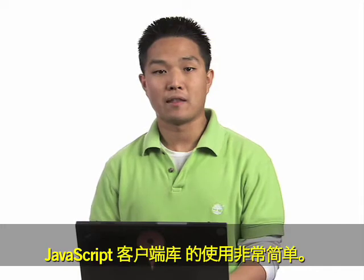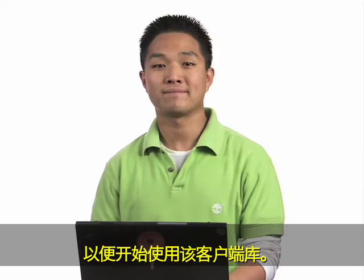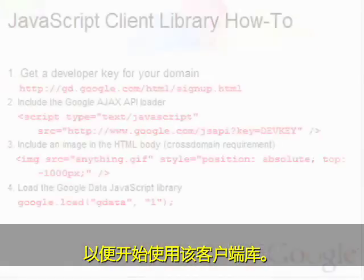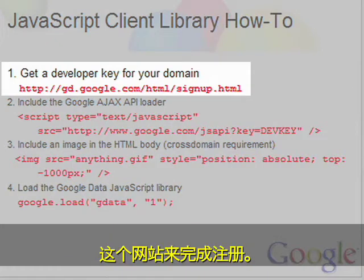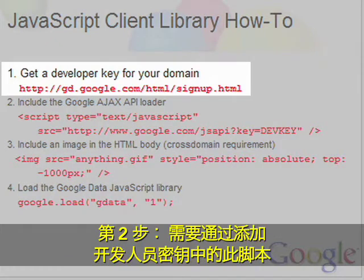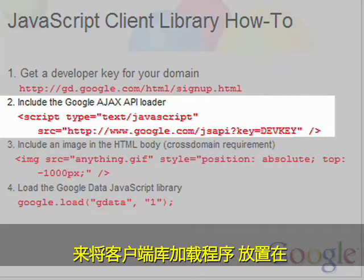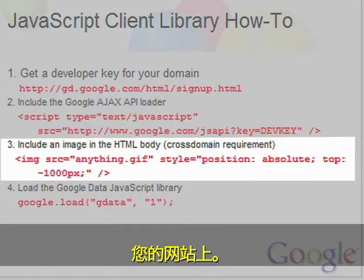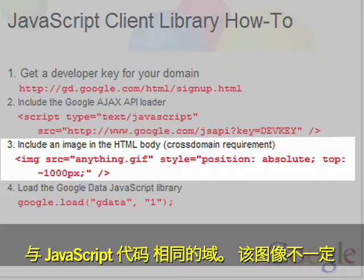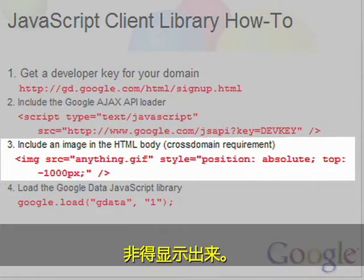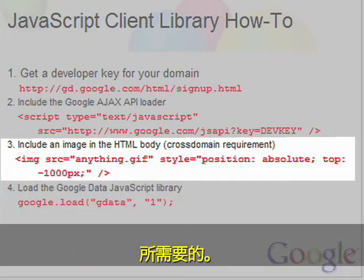Using the JavaScript client library is very easy. I'm going to show you the few steps you need to do to set up your code to start using it. Step one, you have to sign up for a developer key by going to this website. Step two, you need to include the client library loader on your website by placing the script include with your developer key. Step three, you need to upload an image to the same domain where your JavaScript code is going to be. This image doesn't have to be visible — I'm positioning it far off the page. This is needed for cross-domain communication purposes.